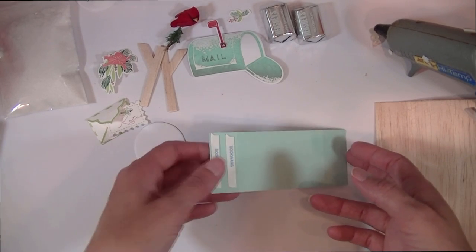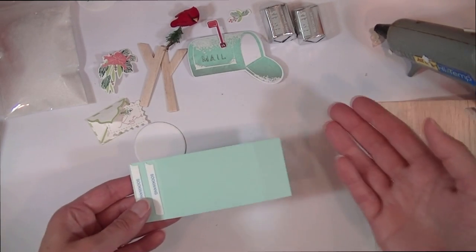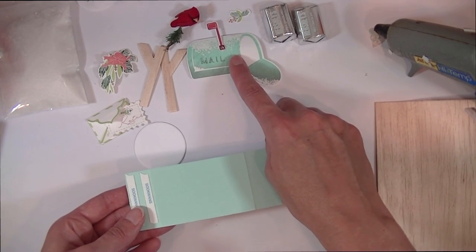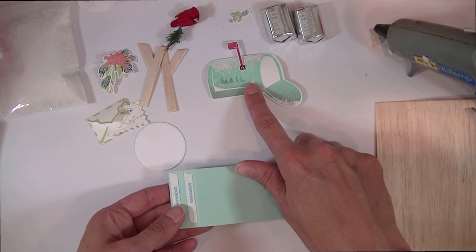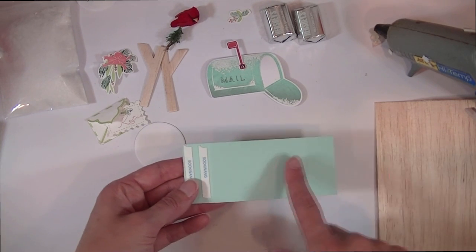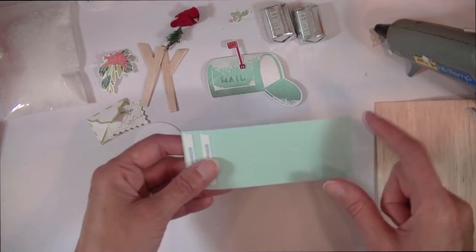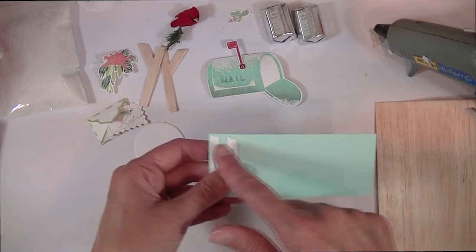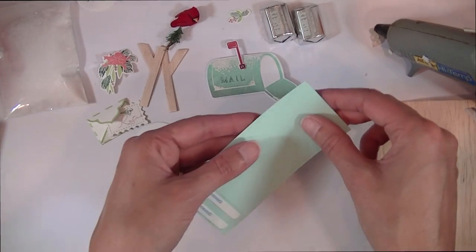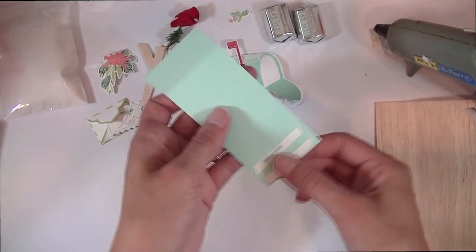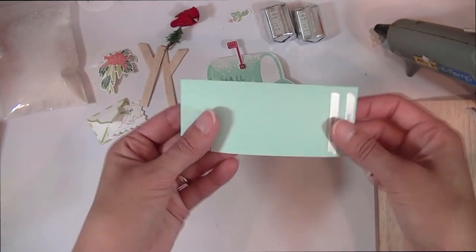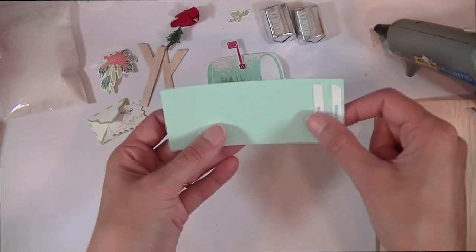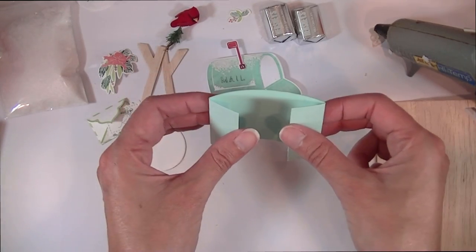Okay, to start off I have a strip of cardstock—this is Aqua Mist, you can use whatever color you want. I did make my cardstock all coordinate with whatever color I stamped my mailbox. This is two inches wide by four and three-quarter inches long, and I have it scored seven-eighths of an inch from each end.